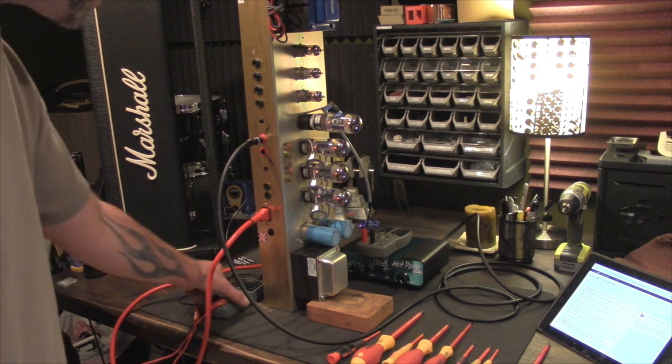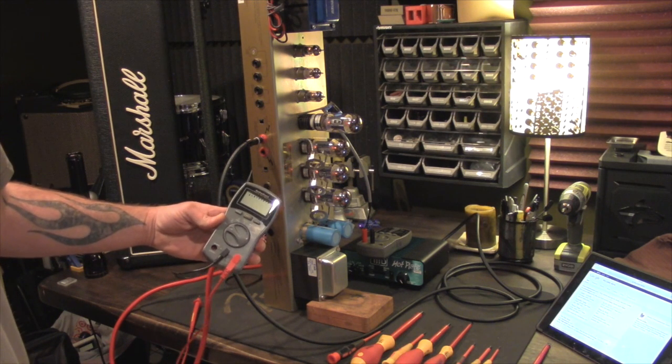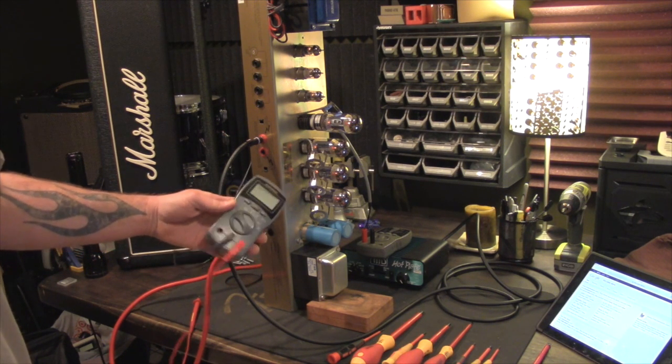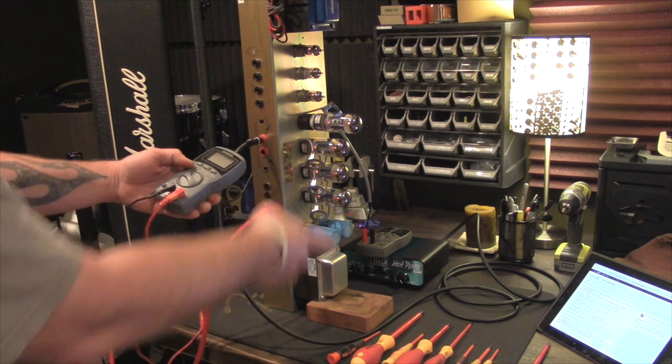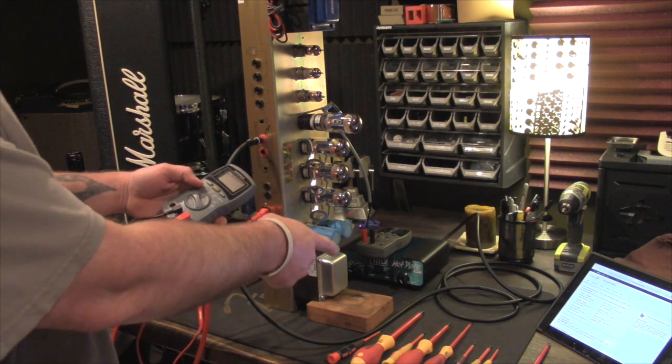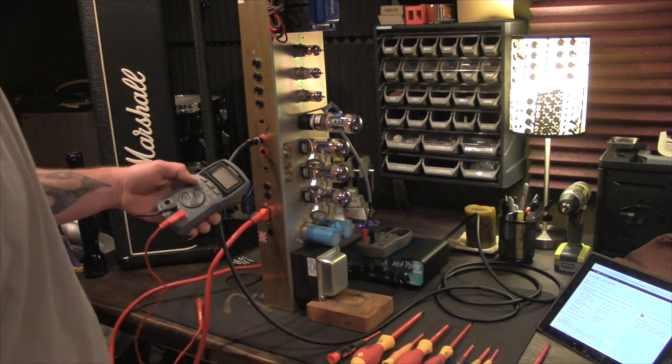I have two Radio Shack digital multimeters. You don't need two. You can use one, but I like to use one to read the plate voltage and the other one stays hooked up to the tube, to the bias probe, so that I can just read that the entire time.